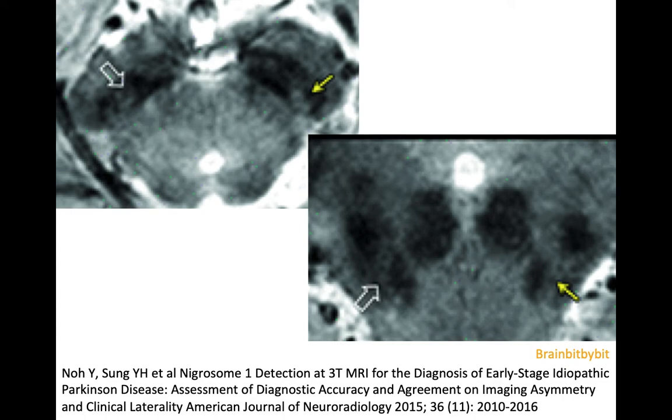The substantia nigra in the midbrain is connected to the ipsilateral striatum — the putamen and caudate — and the ipsilateral motor cortex. This explains why problems with the striatum and putamen can cause symptoms similar to Parkinson's disease, known as Parkinsonism. We will discuss that next time when we look at multisystem atrophy.